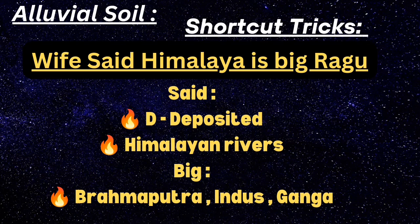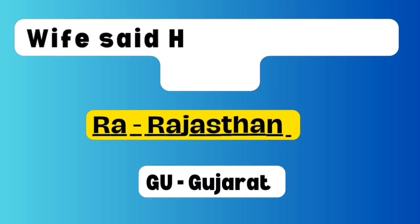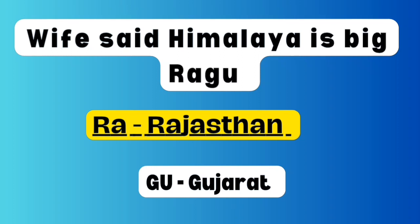Take the word BIG: B represents Brahmaputra, I represents Indus, G represents Ganga. So alluvial soil is deposited by the Himalayan river system - the rivers are Brahmaputra, Indus, and Ganga. Then take the word RAHU: RA represents Rajasthan, GU represents Gujarat. That means alluvial soil extends up to Rajasthan and Gujarat.